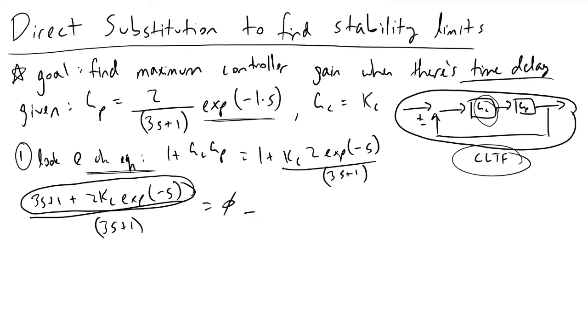We're going to set this equal to zero, and what we're going to look at is when we have 3s plus 1 plus 2Kc times exponential minus s is equal to zero.